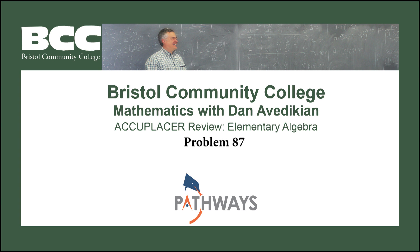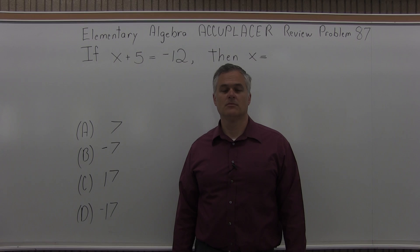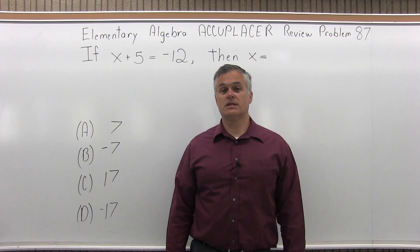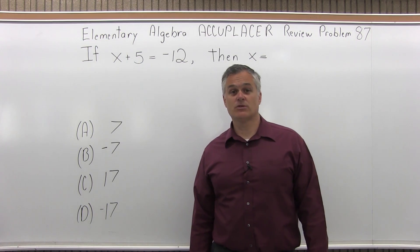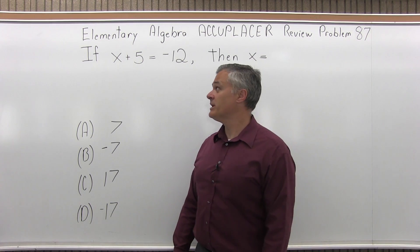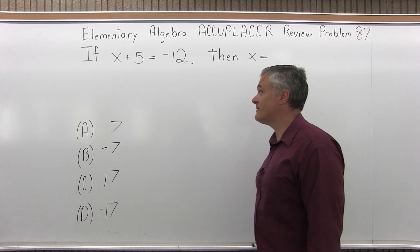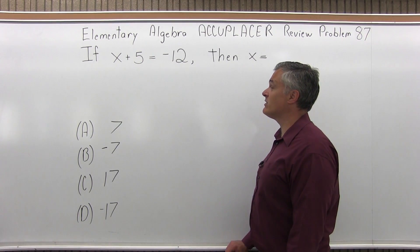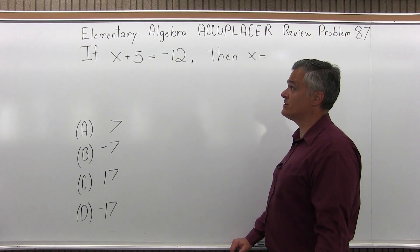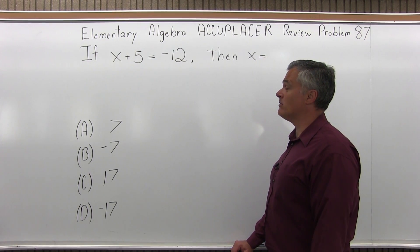Bristol Community College, Mathematics with Dan Avedikian, Accuplacer Review, Elementary Algebra, Problem 87. It says if x plus 5 equals negative 12, then x equals what?